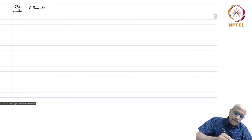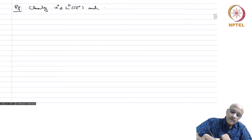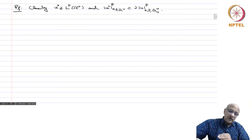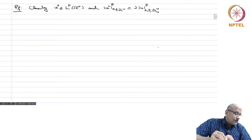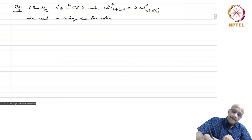Clearly u* belongs to L^p(R^n) — it is just the same function repeated twice. By a change of variable formula you get that ||u*||^p_{L^p(R^n)} equals twice ||u||^p_{L^p(R^n_+)}, since the integral is repeated once in the upper half-space and once in the lower half-space, and by the change of variable x_n → -x_n you convert it and get a factor of two. Now we need to study the derivatives of u*.